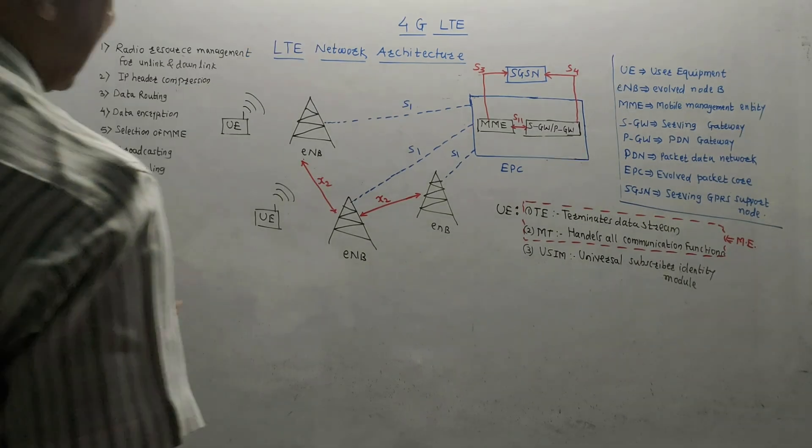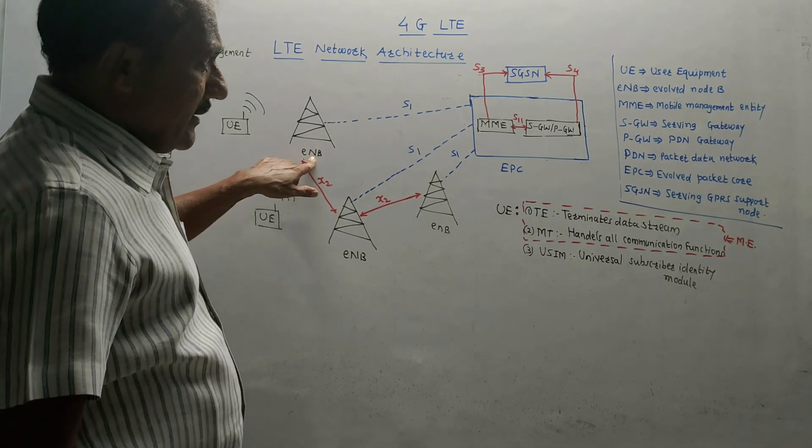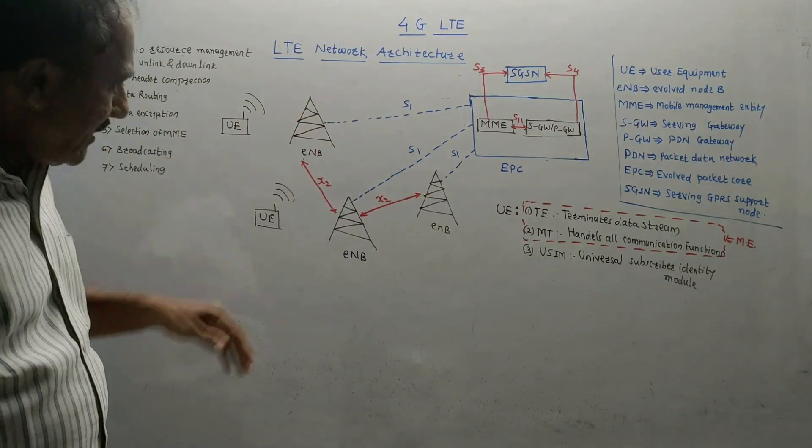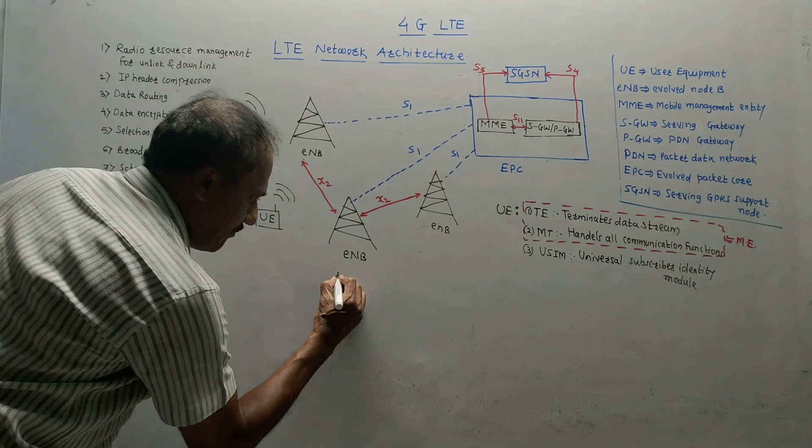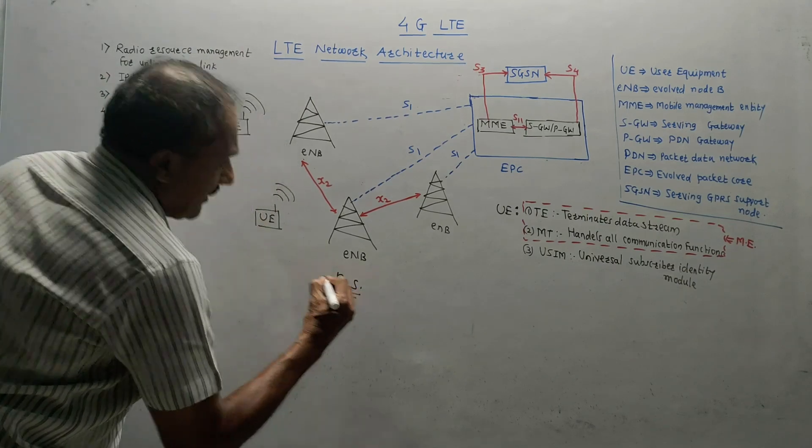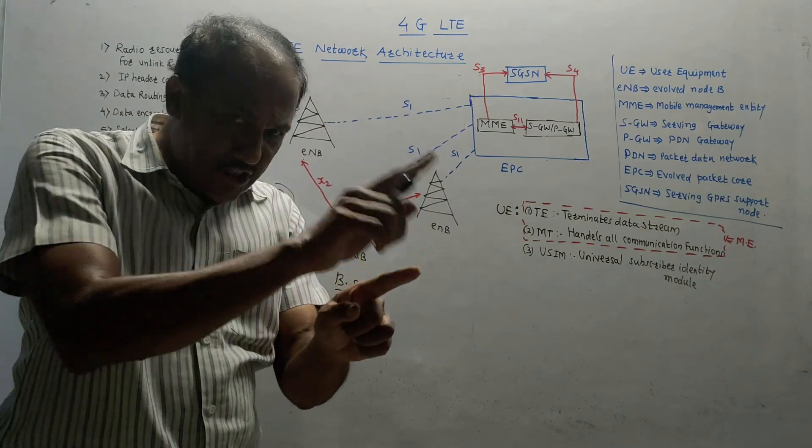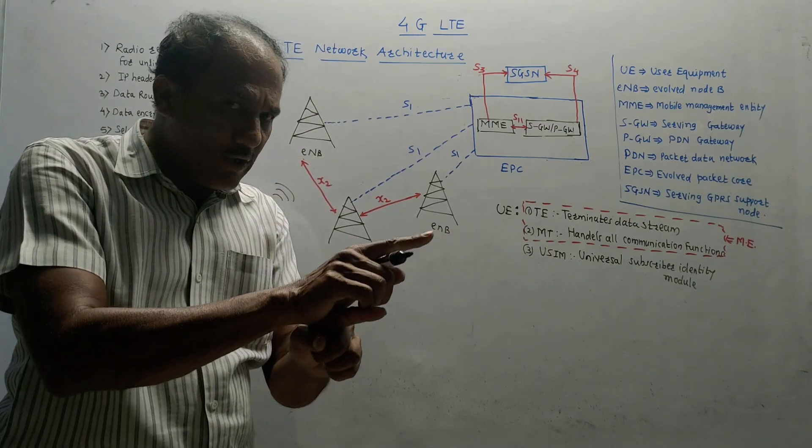Next block is ENB, that is evolved node B. The most important integral part of ENB is base station.